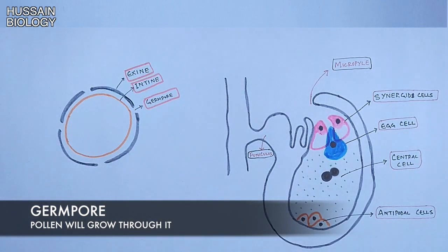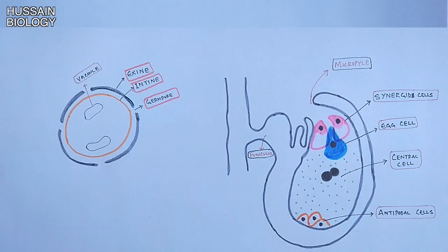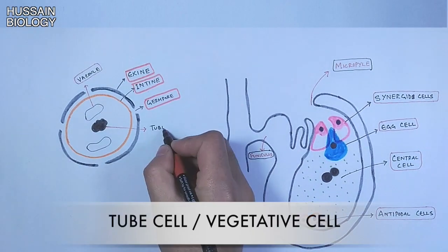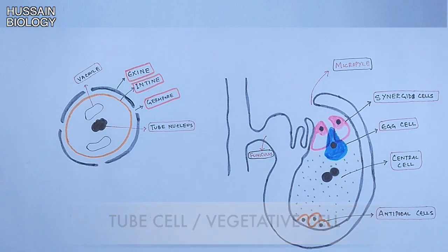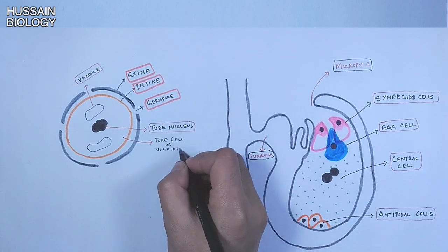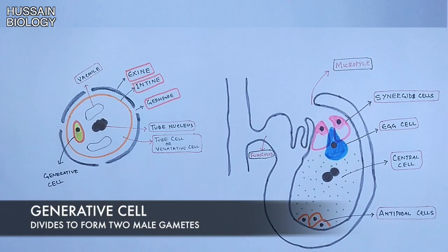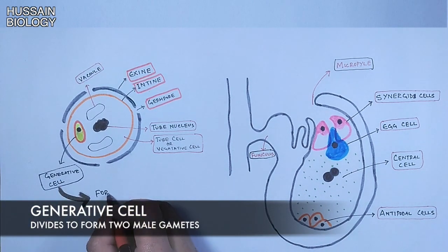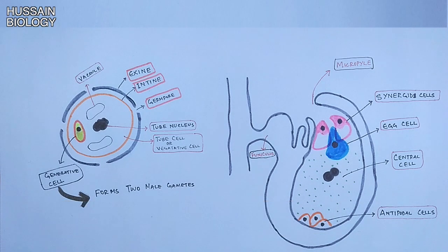Looking inside the pollen, it has vacuoles and a tube or vegetative nucleus — so the whole cell is the tube cell or vegetative cell. Furthermore, it has another important cell inside called the generative cell. This generative cell later forms two male gametes, either upon pollen shedding or during tube formation, when it divides into two sperm cells.